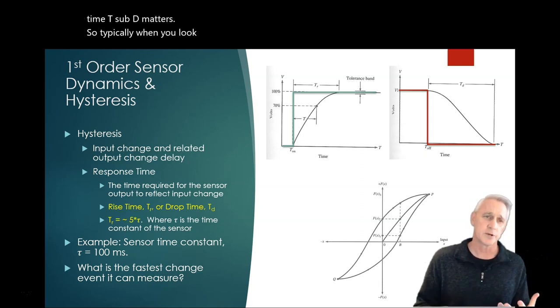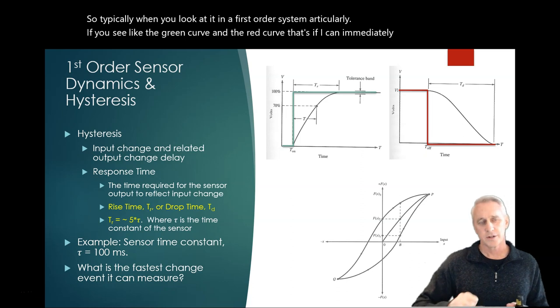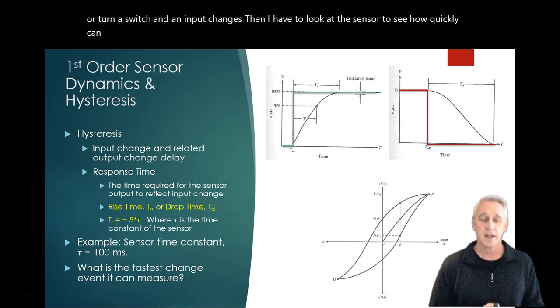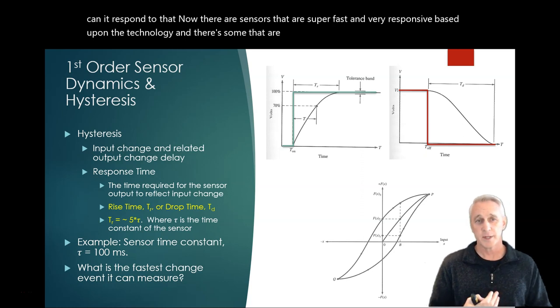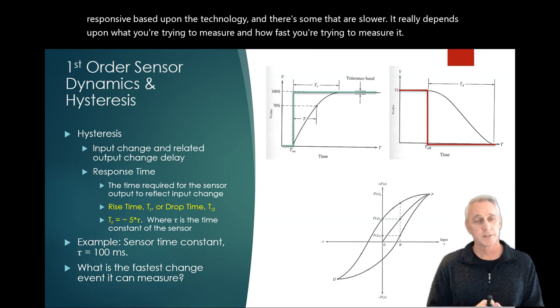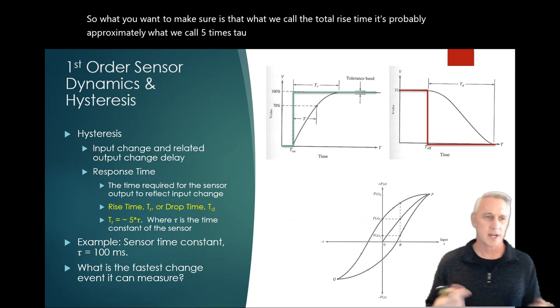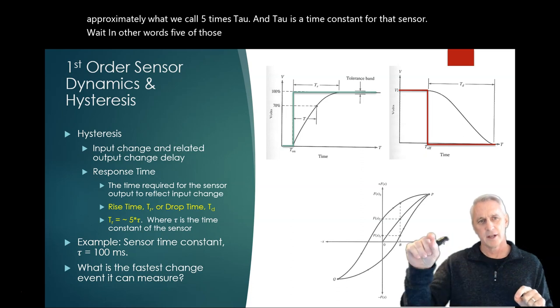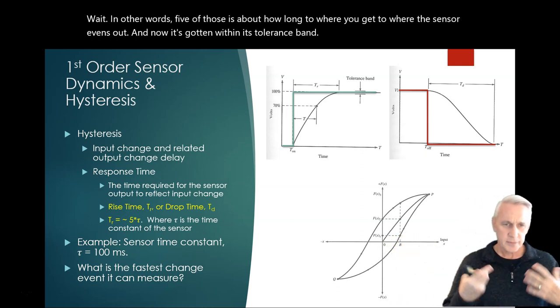If I go from zero to 100 in one second with the phenomenon I'm measuring, but my sensor can't keep up with that, and maybe it takes the sensor two seconds to get to 100, you're going to have this lag effect. This is where things like your rise time, or if you're dropping, a drop time T sub D, matters. Typically, when you look at it in a first order system, if you see like the green curve and the red curve, that's if I can immediately change something or turn a switch and an input changes. Then I have to look at the sensor to see how quickly can it respond to that.